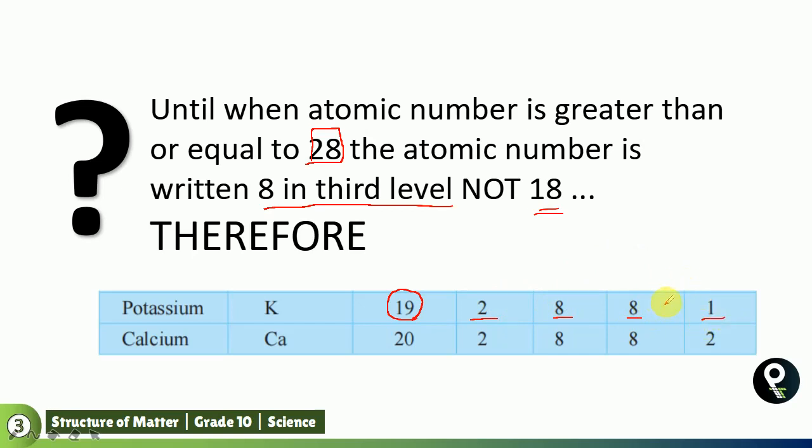Now, they will not write 9 here. Instead of that, they will break it 8 and 1. Until when? Up to 28. So, the calcium also has 20. Therefore, calcium also written as 2882.